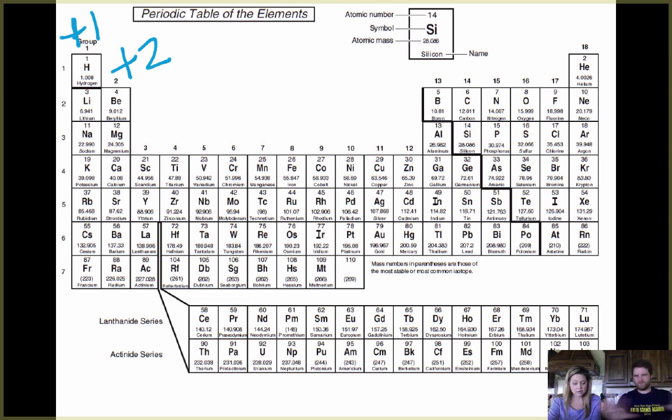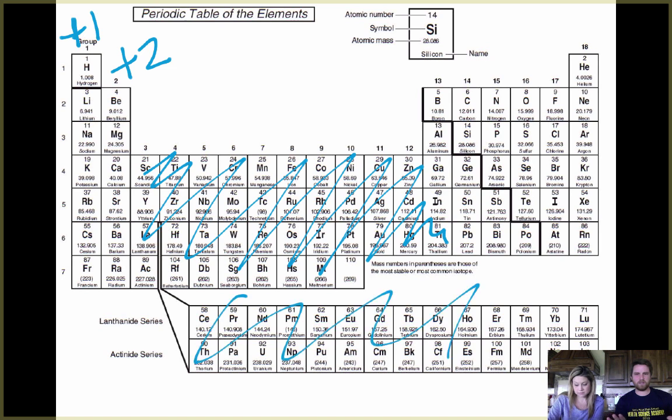Let's skip the transition metals for now. Skip everything in the middle because it just gets funky and crazy. Let's go straight to group 13 or family 3A. They have 3. We could lose 3 or gain 5. Easier to lose 3. When you lose negatives, you become more positive. What about 4?